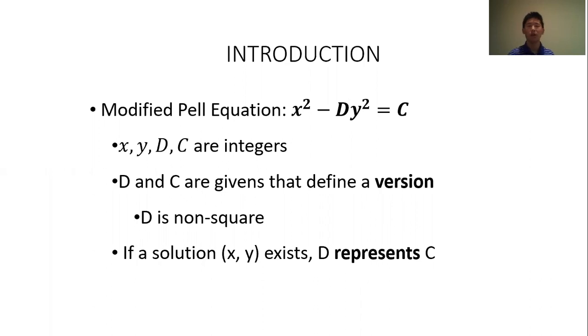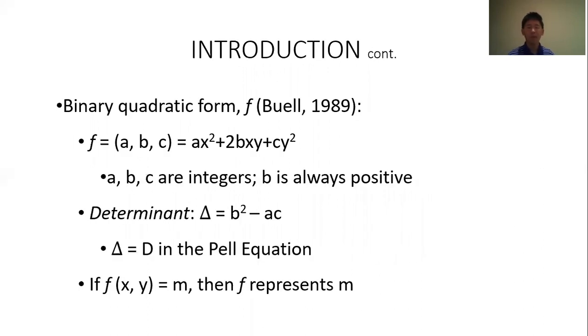So first, an introduction to the Modified Pell Equation. The Modified Pell Equation takes this form right here, where D and C are given integers that determine a specific version of the equation. And if the solution x, y to satisfy the equation exists, we say that D represents C. So a quick example, the equation x squared minus 2y squared equals 1 is solvable, so 2 represents 1. But the equation x squared minus 2y squared equals 3 is not solvable for the integers x and y. So we say that 2 does not represent 3. And the goal of my project is to determine why these relationships do or do not occur.